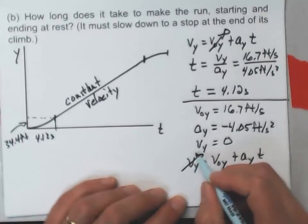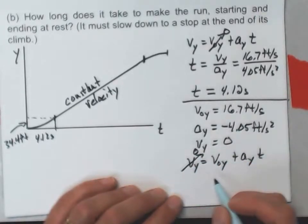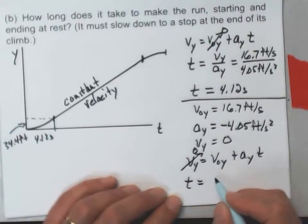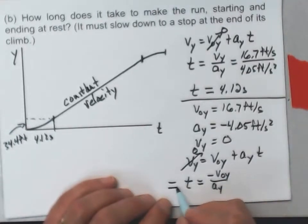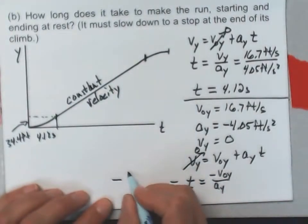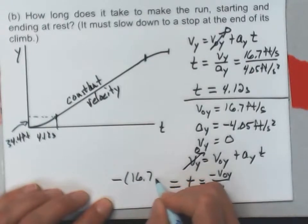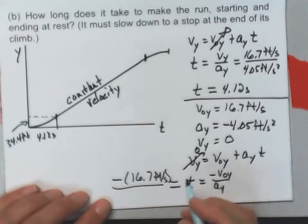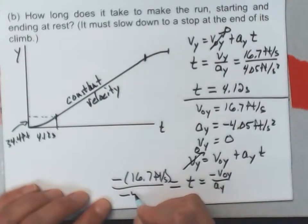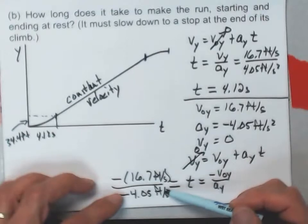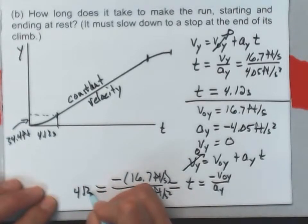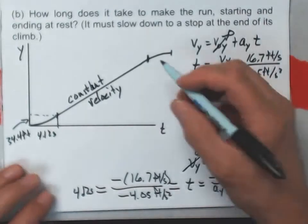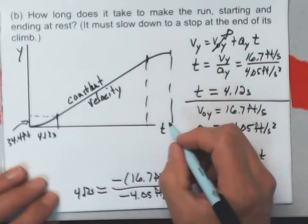So this equation, v sub y equals v naught y plus a sub y t, looks a little different here because this is the one that's zero, this one isn't. And if I solve that for t, this time I'll get t is minus v naught y over a sub y. That'll be negative 16.7 feet per second on top. On the bottom, I'll have the acceleration in that direction, which is minus 4.05 feet per second squared. And you probably noticed these are exactly the same numbers that I had when I did it, and I get exactly the same time interval, 4.12 seconds.